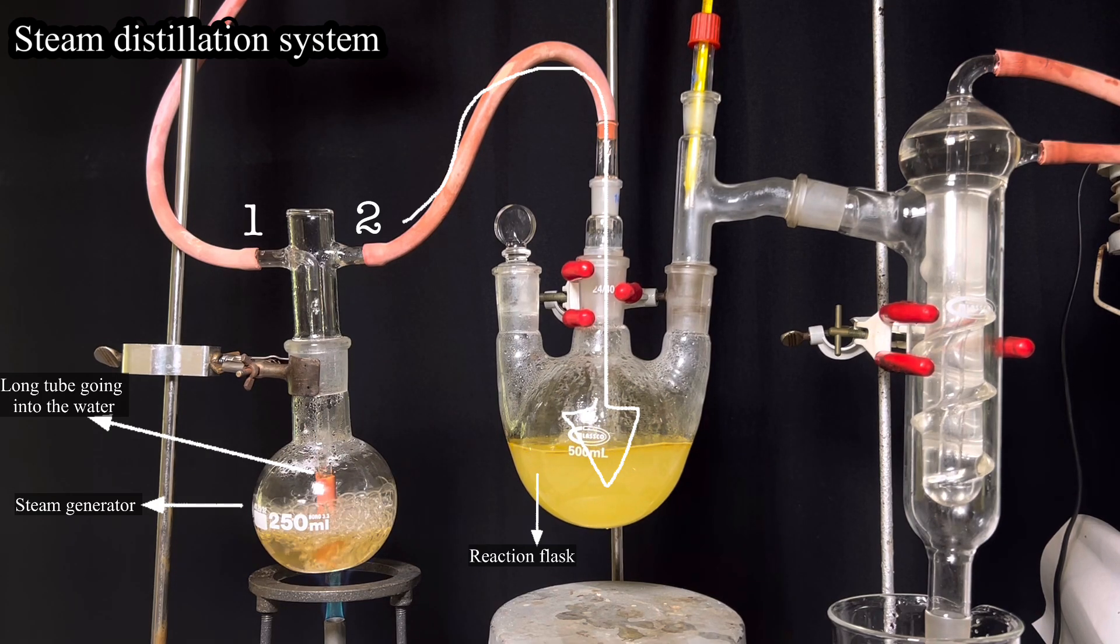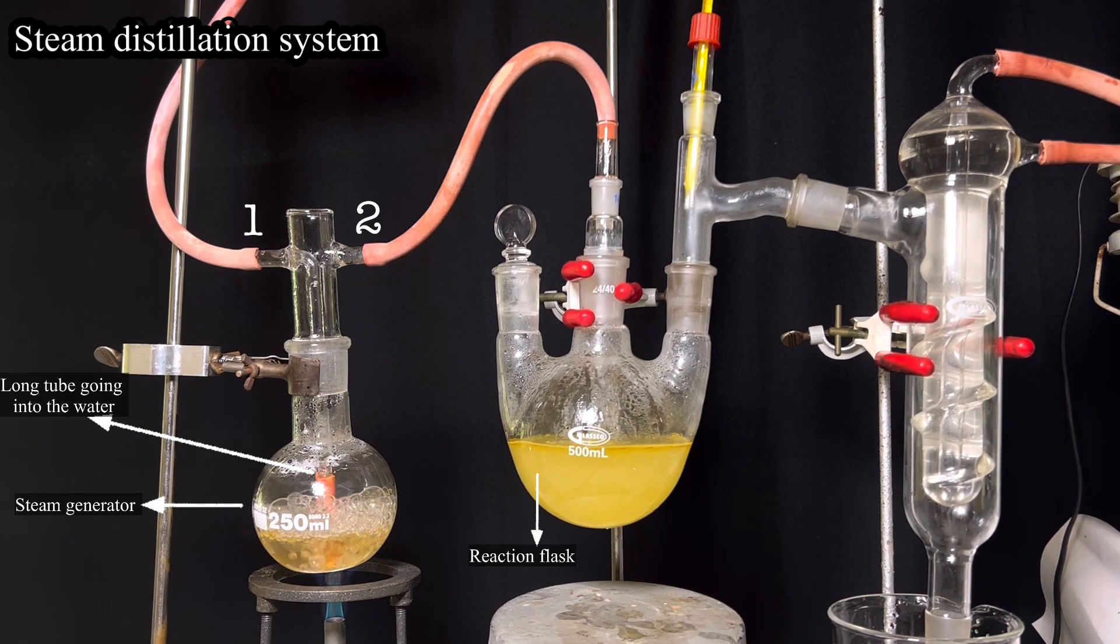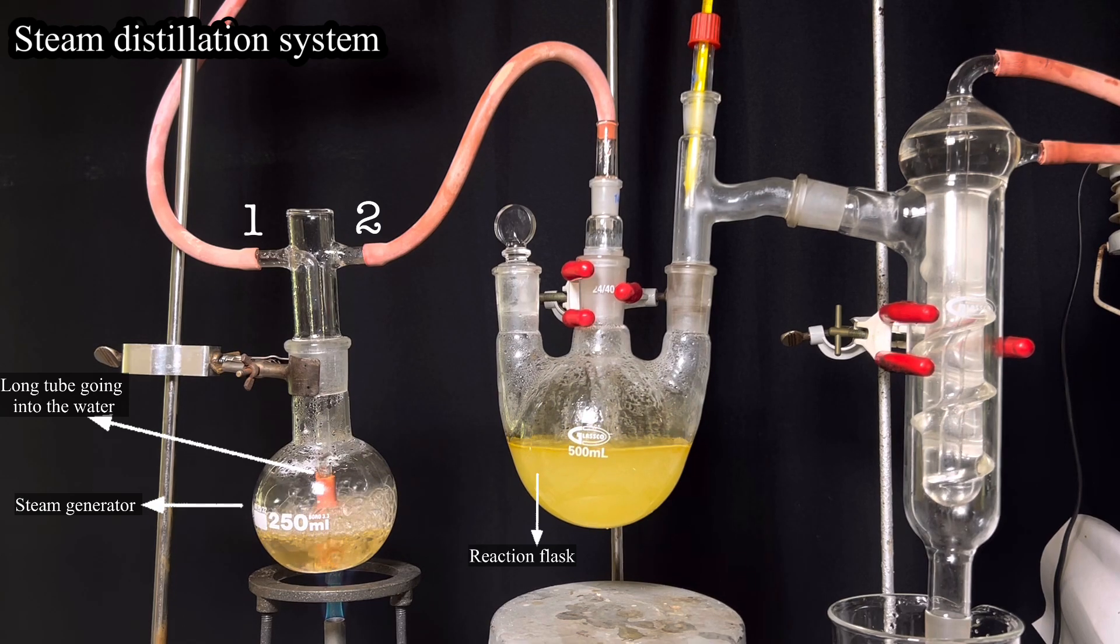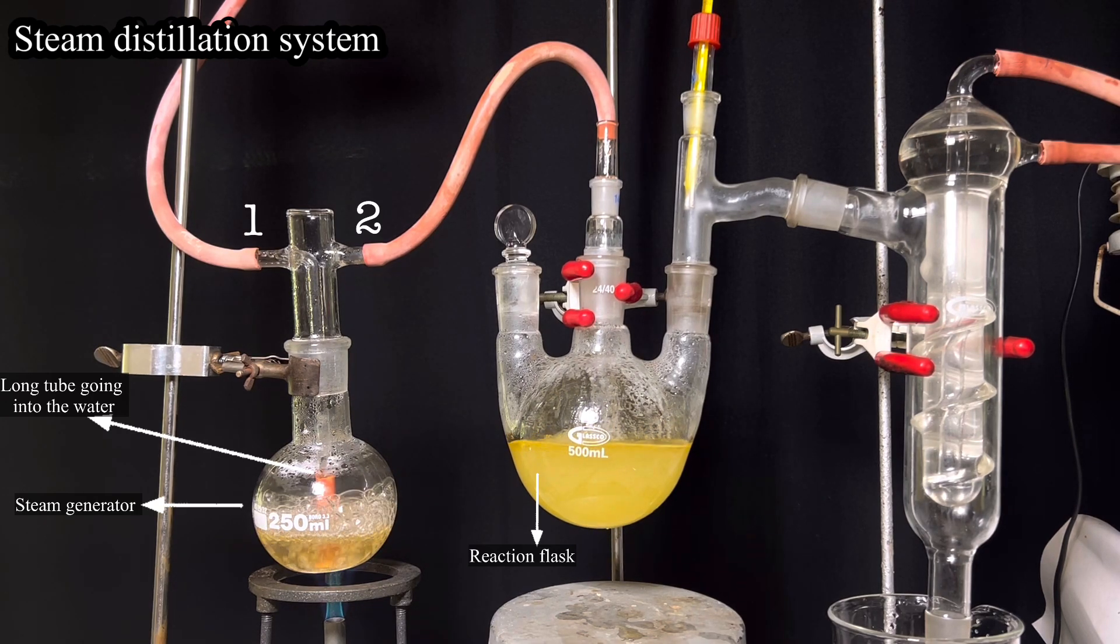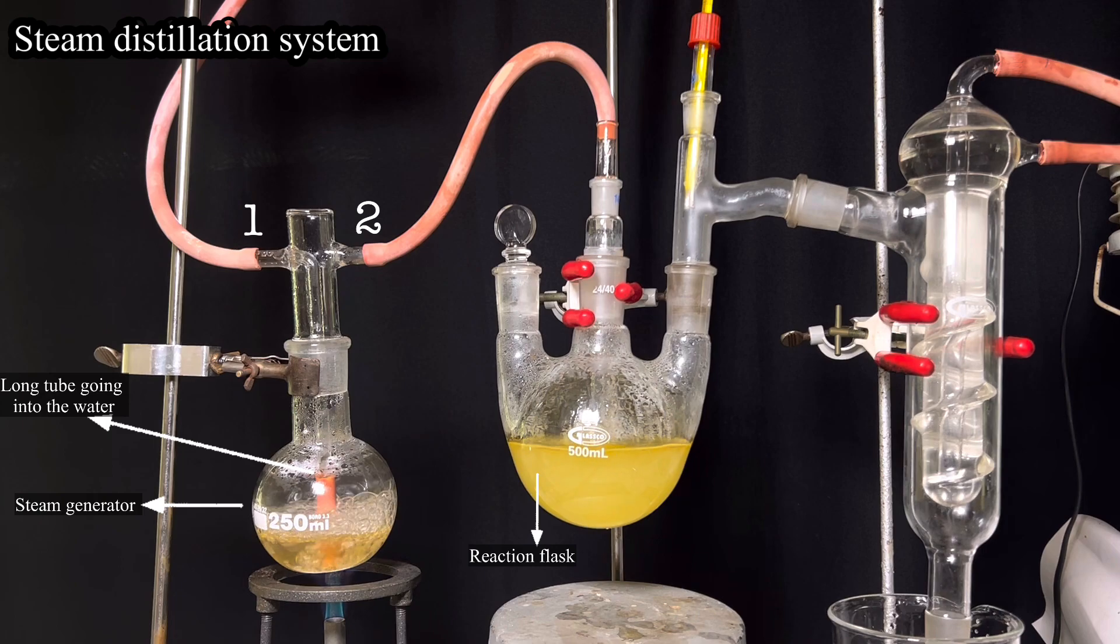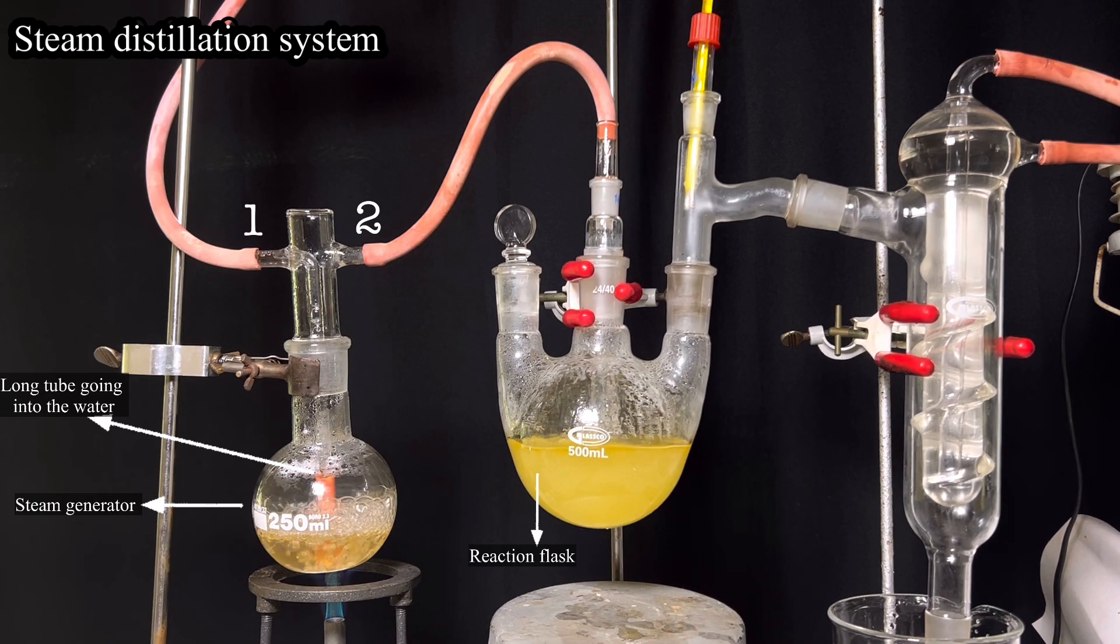Ideally, the steam generator flask should be of larger size so that effective steam could be generated. In my case, I did not have any large flask with 29-32 mm joint as the steam adapter that I had could only fit to that size. Water in the steam generator flask was boiled using a Bunsen burner.